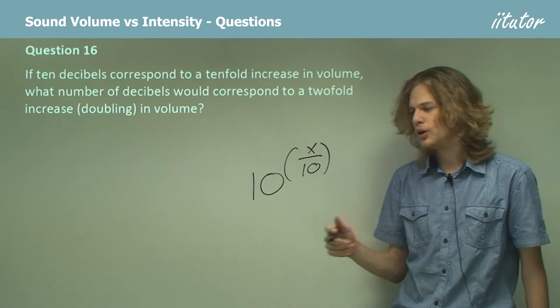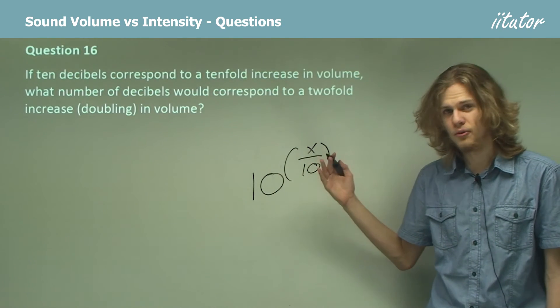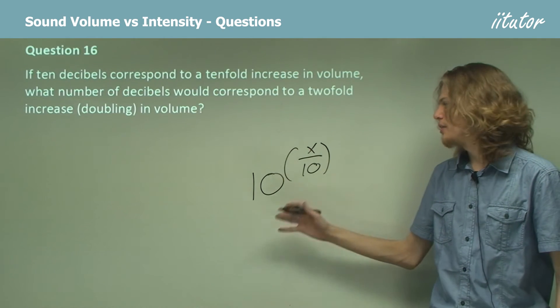If we have 10 decibels, we'll have an intensity of 10. If we have 20, we'll have an intensity of 10 to the 2, 100. If we have 30, it'll be a thousand and so on.